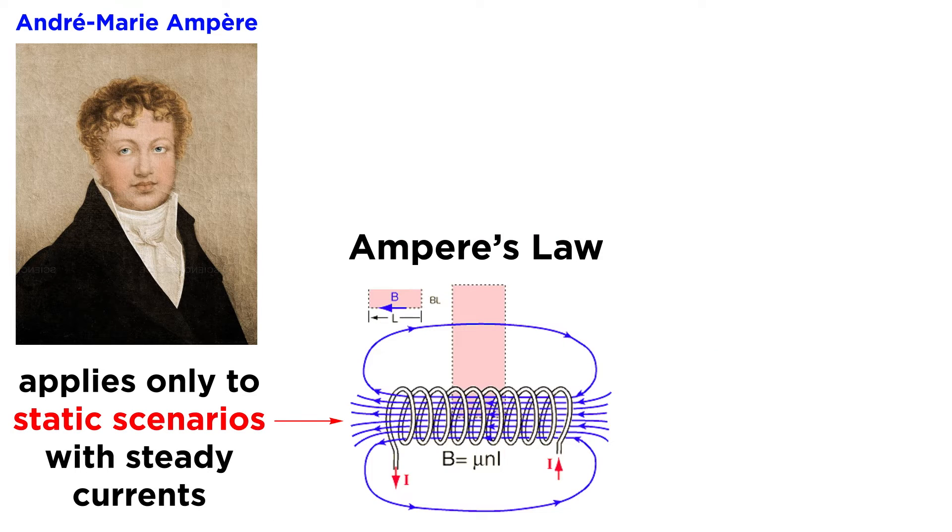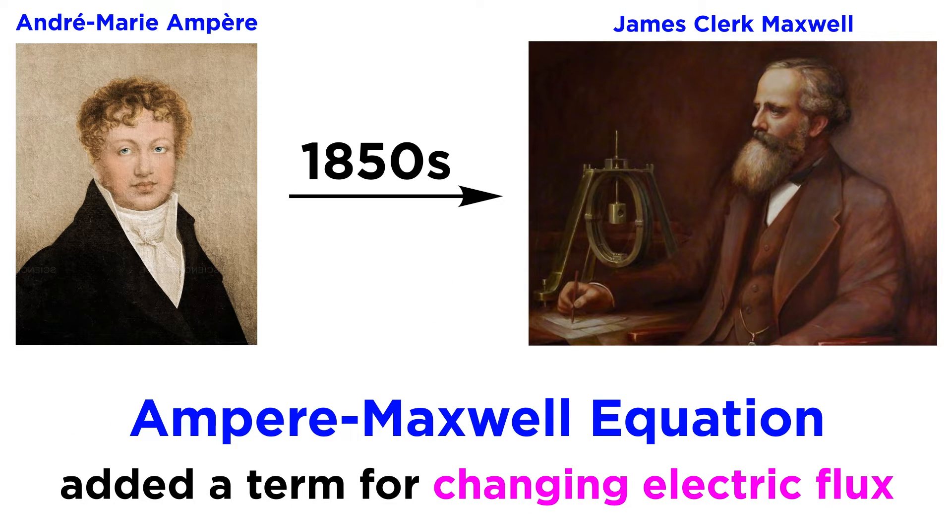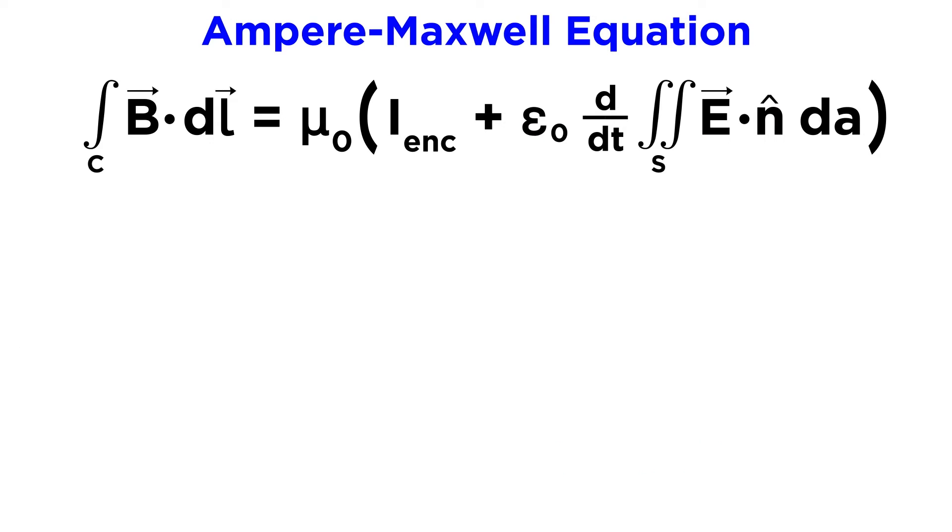For many years, Ampère's law was known to apply only to static scenarios with steady currents. Maxwell's addition of a new term for changing electric flux in the 1850s allowed Ampère's law to apply to time-dependent situations. Here is the integral form of the Ampère-Maxwell equation. Let's unpack this a little bit before applying it.